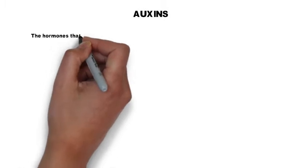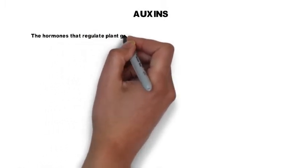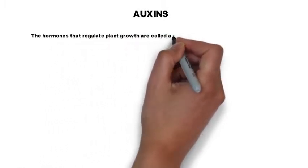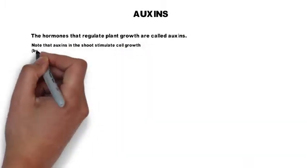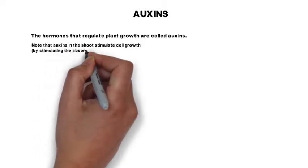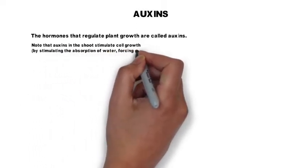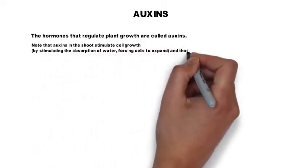Auxins. The hormones that regulate plant growth are called auxins. Note that auxins in the shoot stimulate cell growth by stimulating the absorption of water, forcing cells to expand, and that auxins in the root slow down cell growth.